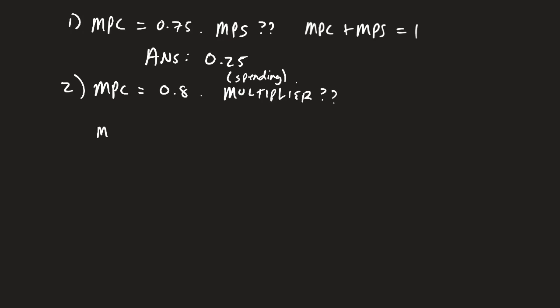You know that the multiplier is going to be equal to 1 over 1 minus MPC. In this case, it's 1 over 1 minus 0.8, which equals 1 over 0.2, which equals 5. So the multiplier here is 5.